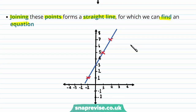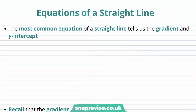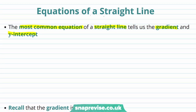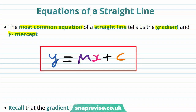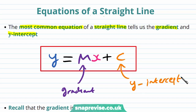We'd like to be able to find an equation which relates y to x. Given a value of x, we'd like to be able to find the associated value of y. So how can we find an equation of a straight line? The most common equation of a straight line tells us the gradient and the y-intercept. We often write y is equal to the gradient m multiplied by x plus c, where m is our gradient and c is often referred to as our y-intercept.